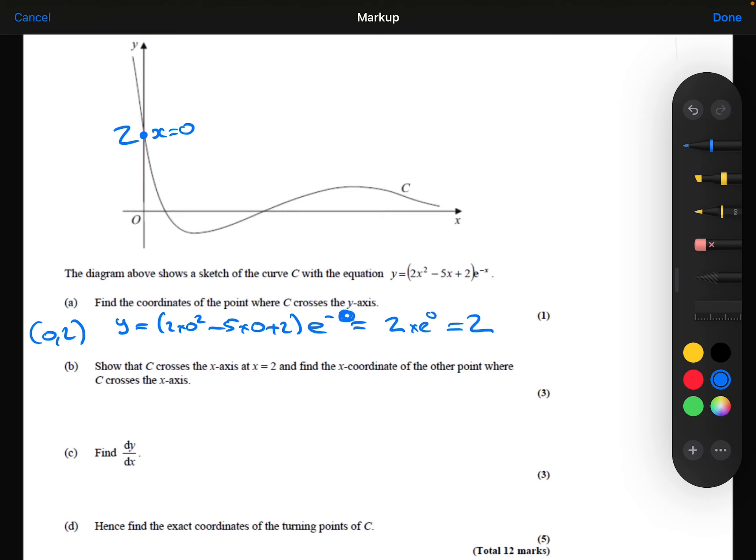Part B: Show that the curve C crosses the x-axis at x equals 2 and find the x-coordinate of the other point where C crosses the x-axis. I know it crosses the x-axis when y equals 0, so let me take my curve and make that equal to 0.